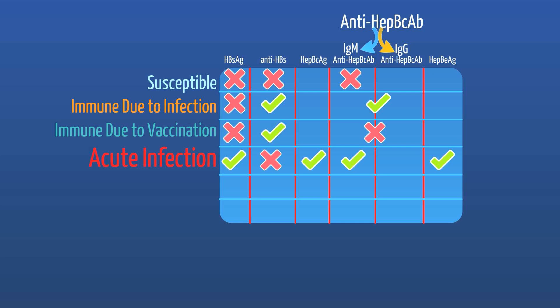In our fourth scenario, we have hepatitis B surface antigen positive and IgG hepatitis B core antibody positive. Given we have surface antigen positive, we know the virus is present in the patient. But with core IgG positive, this indicates the patient has had this infection for quite some time but has not developed immunity, indicating a chronic infection.